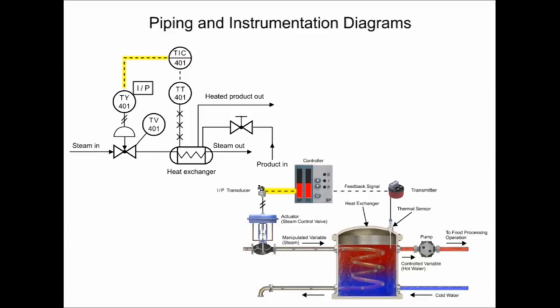An electronic signal from the controller is indicated by the dashed line. The controller output is connected to the transducer that controls the steam flow, indicated by the second letter Y of the functional identifier.